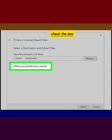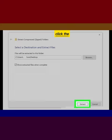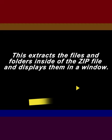Check the box 'Show extracted files when complete,' then click the Extract button. This extracts the files and folders inside of the ZIP file and displays them in a window.